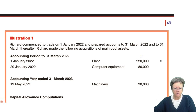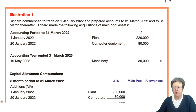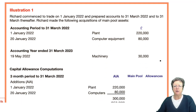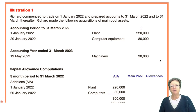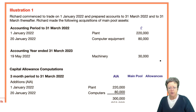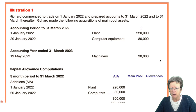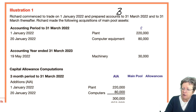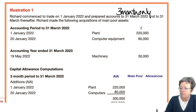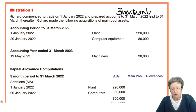Let's have a look at the first illustration, because illustrations are much easier to understand once you've got the rules. Richard started to trade on 1st of January 2022 and prepares accounts to the 31st of March — so this is a three-month set of accounts. He bought the following assets in the period up to March 2022.